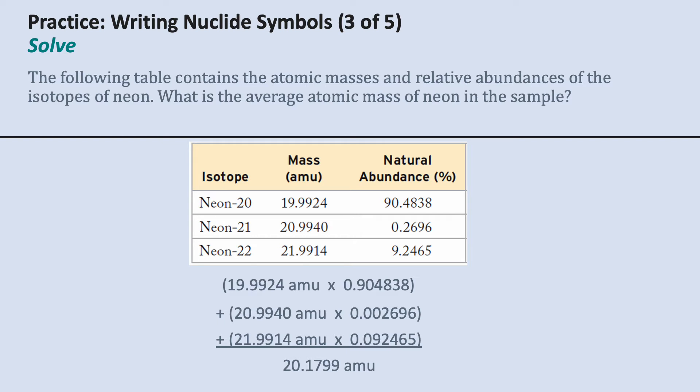And then neon-22 is my third line with the mass of 21.9914 and a 9% abundance. My decimal here is 0.092465.